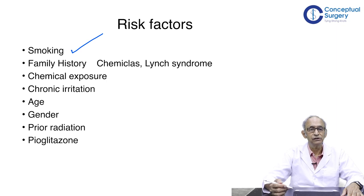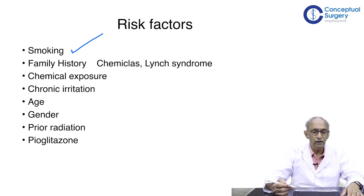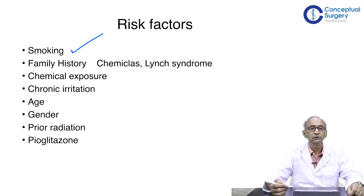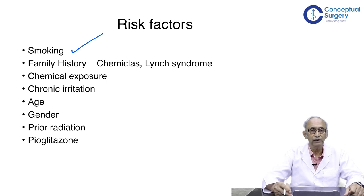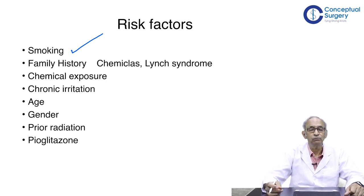All the chemicals that enter the circulation after smoking will eventually reach the kidney and be cleared out in the urine. Once cleared in the urine and stored in the bladder prior to micturition, there is enough time for these chemicals to act upon the urothelium. This is an important risk factor to keep in mind even during treatment, as patients often give up smoking before therapy but restart during follow-up.